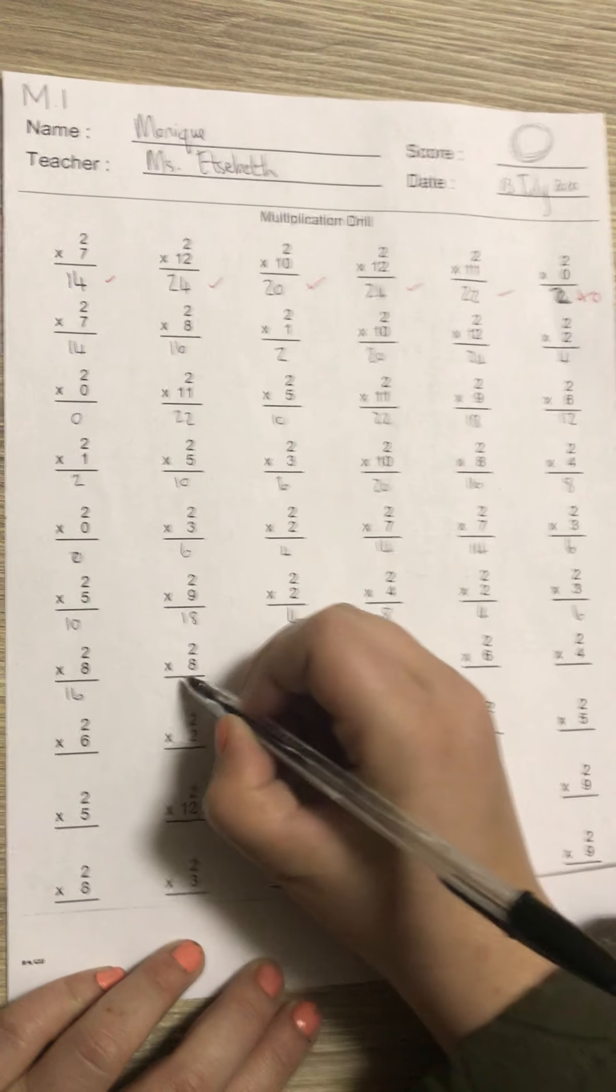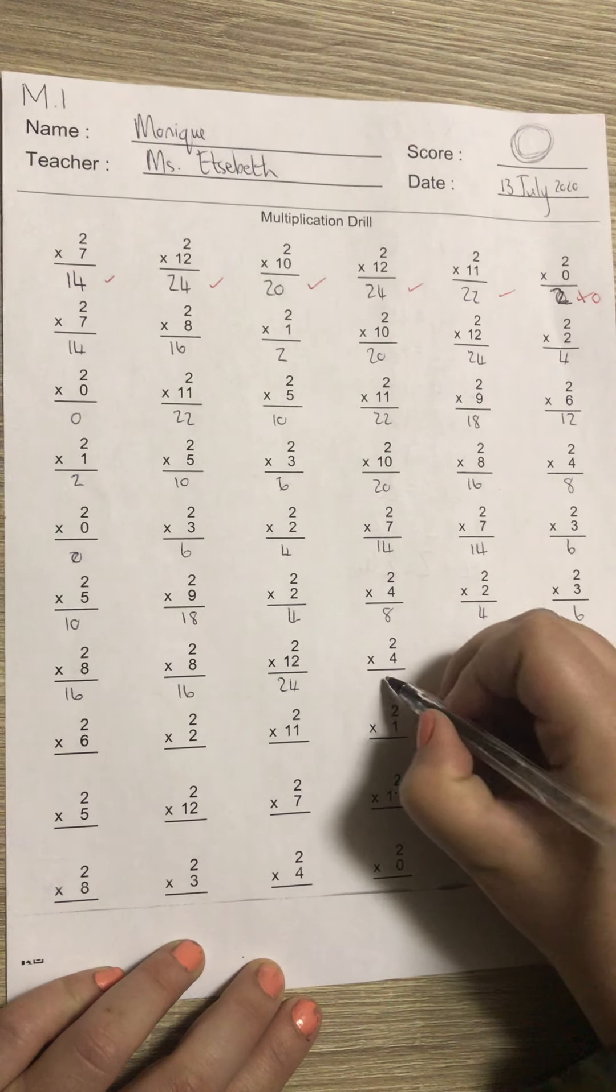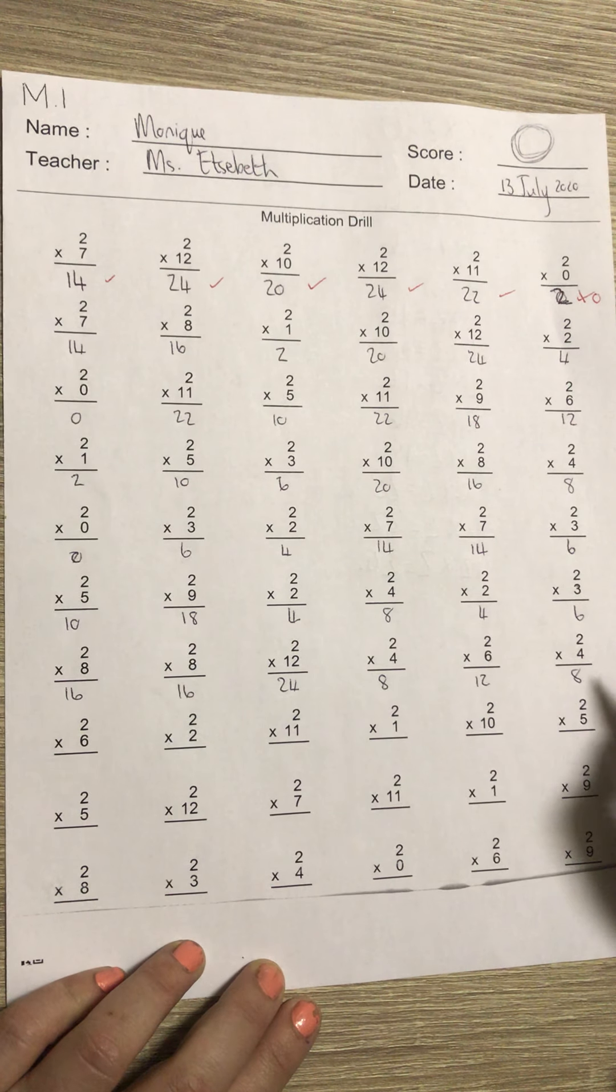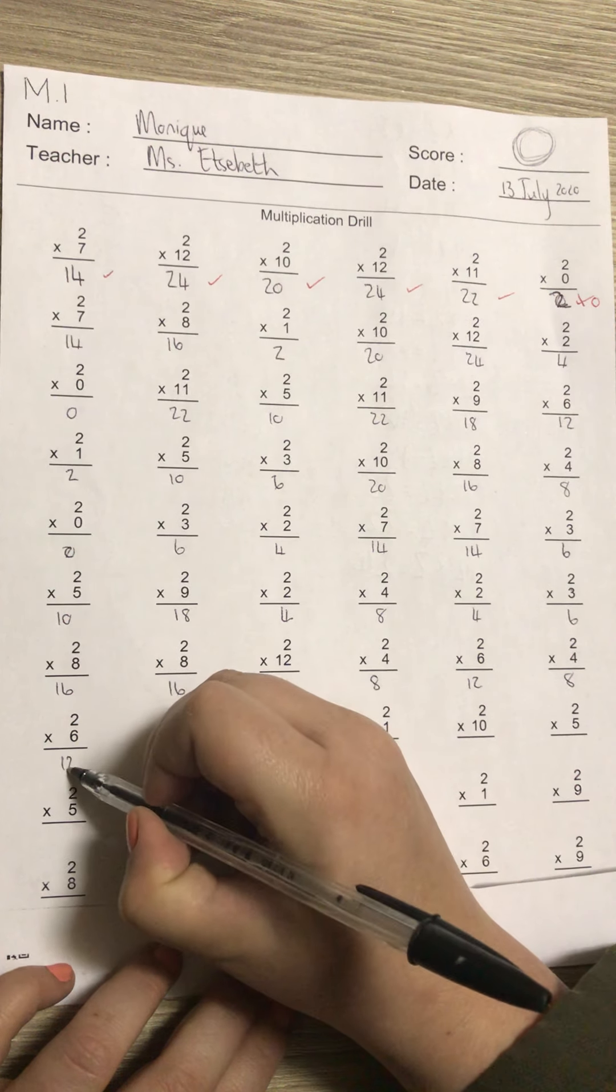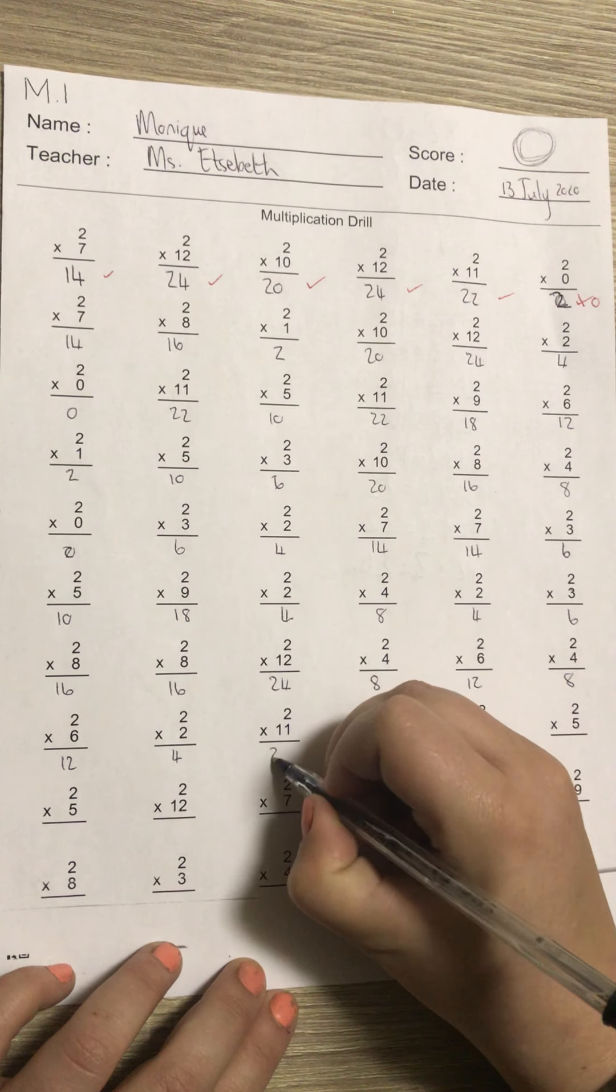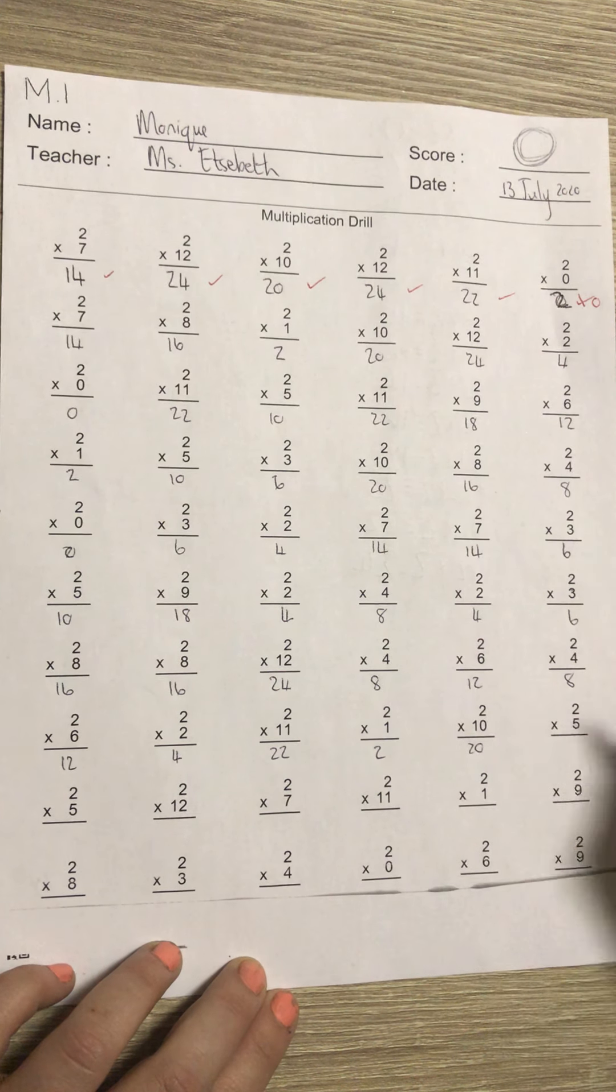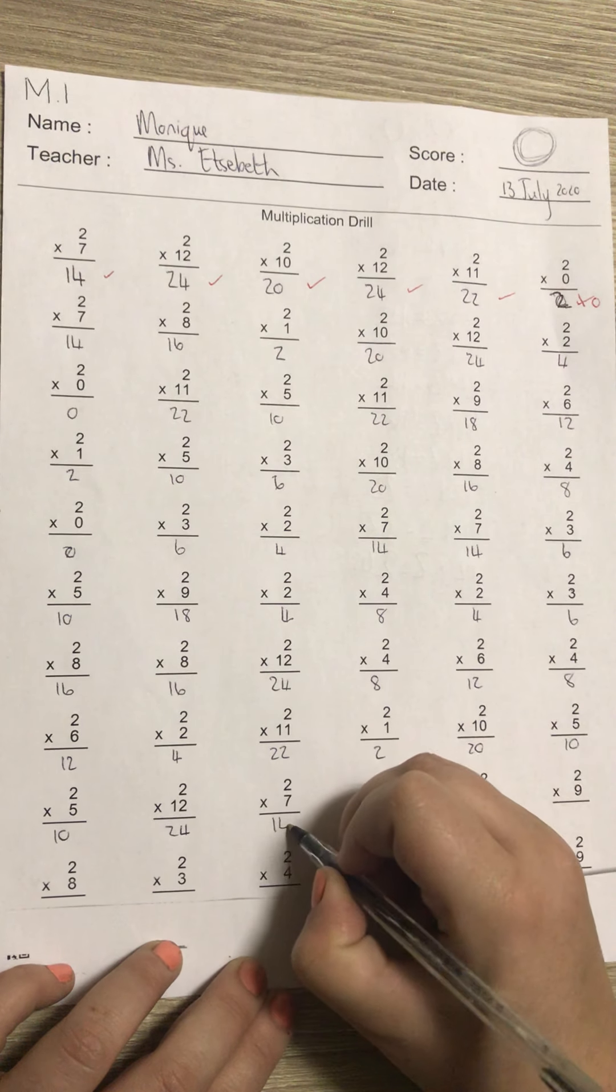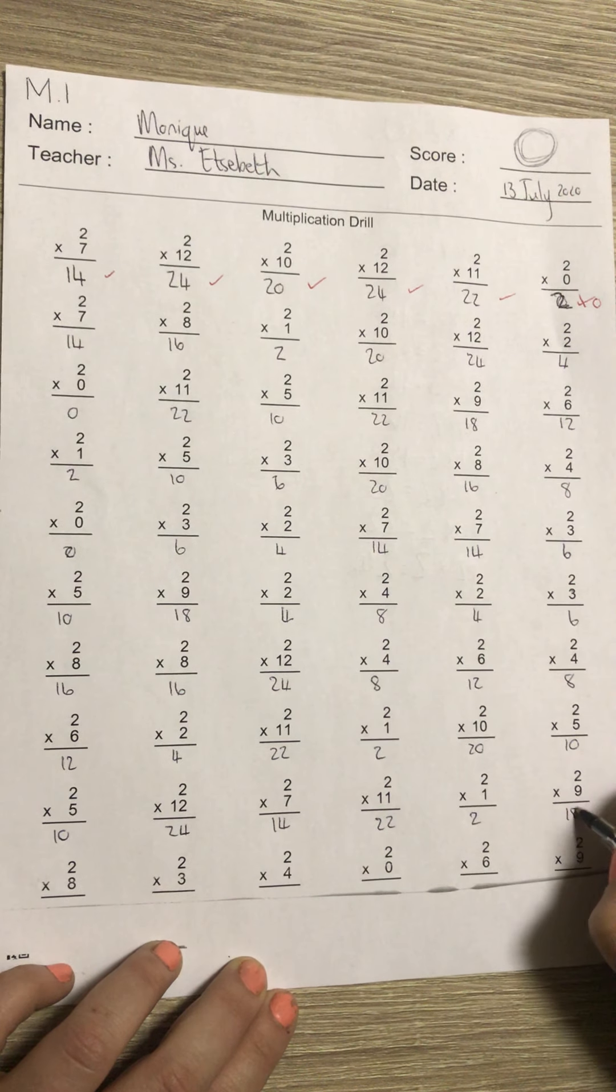Two times eight is 16, two times eight is 16, two times 12 is 24, two times four is eight, two times six is 12, two times four is eight. Third last line: two times six is 12, two times two is four, two times 11 is 22, two times one is two, two times 10 is 20, two times five is 10. Two times five is 10, two times 12 is 24, two times seven is 14, two times 11 is 22, two times one is two, two times nine is 18.